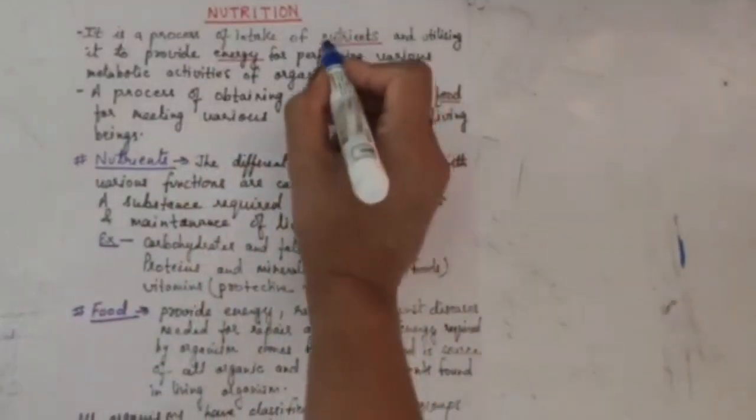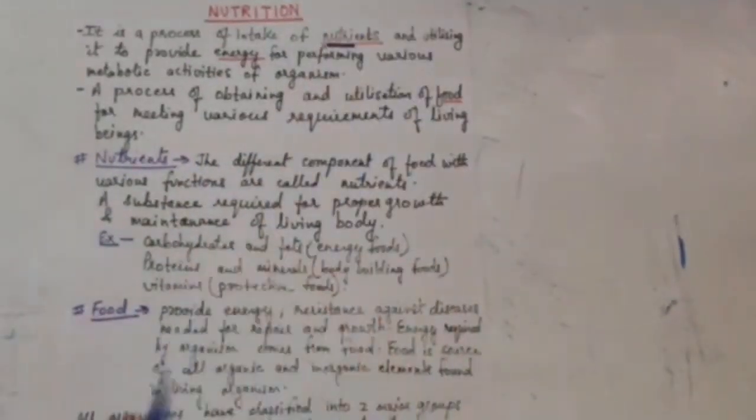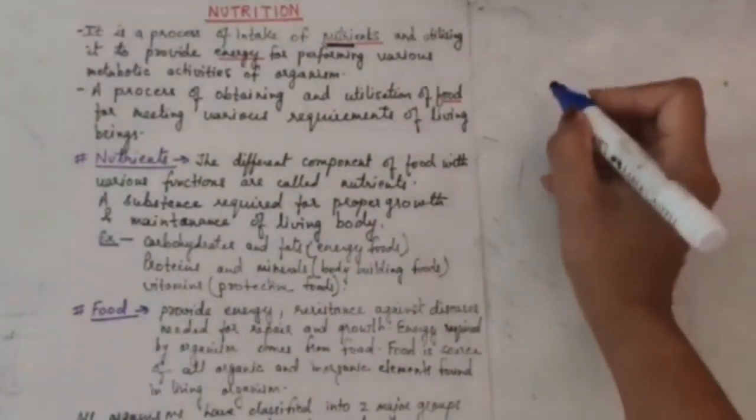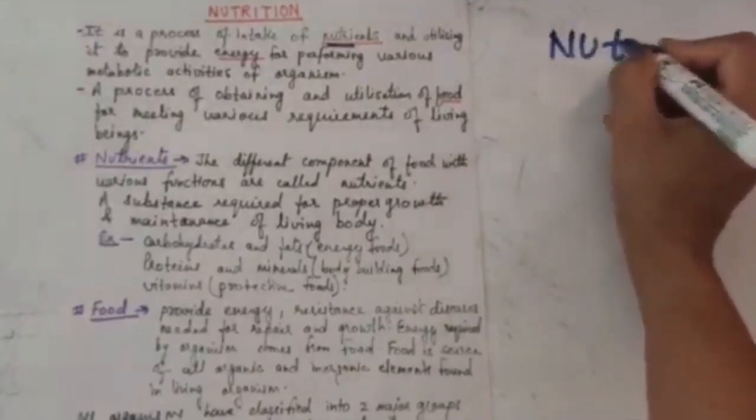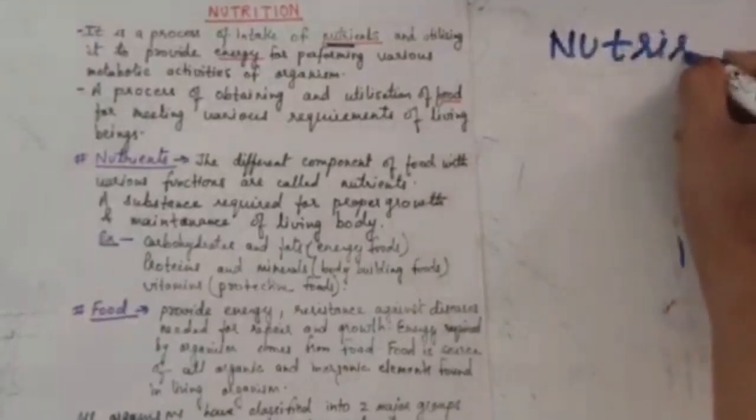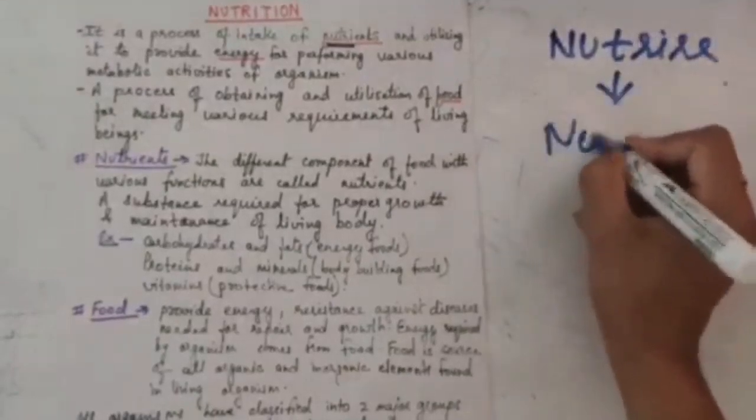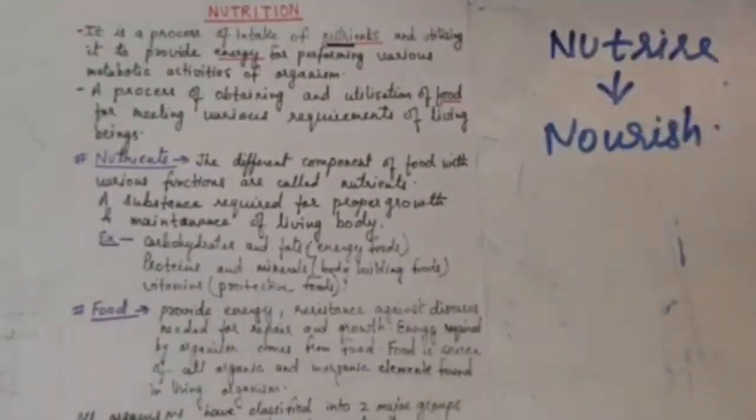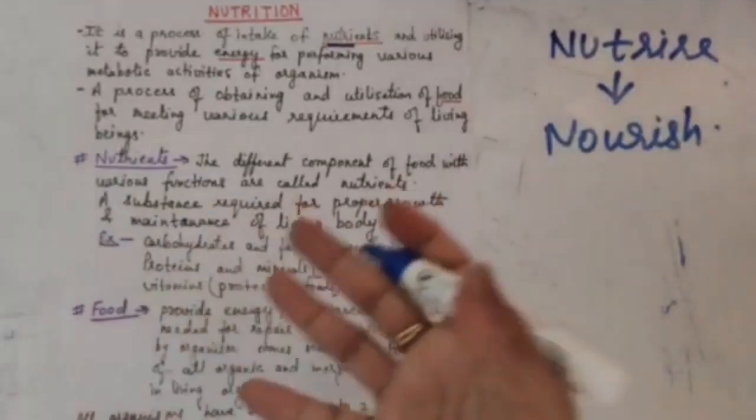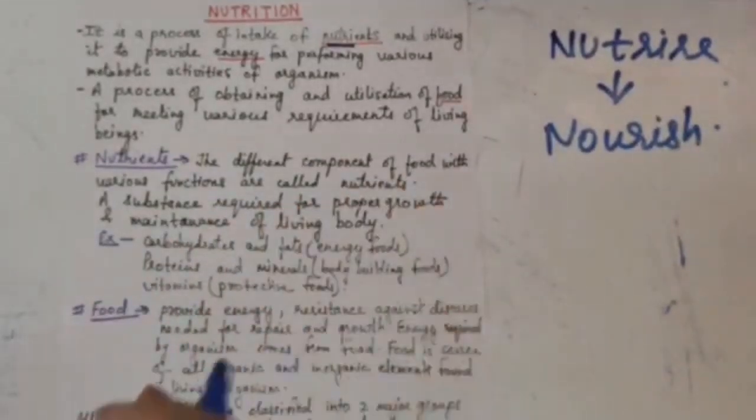What are the nutrients? Nutrients are different components. We can say they are the different components of food with various functions. Now this nutrition is derived from the word 'nutri' which means to nourish. Hence, we can say that it is a process of obtaining and utilization of food for meeting any of the requirements.